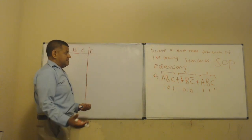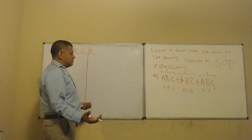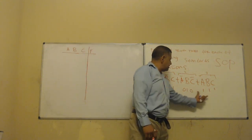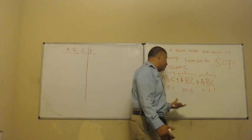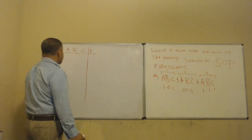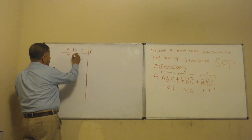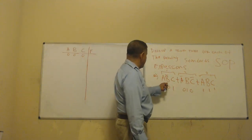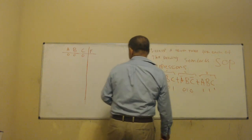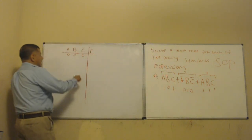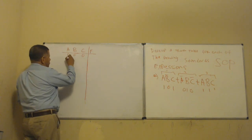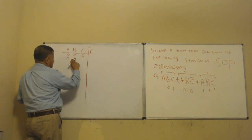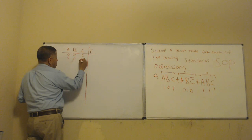But we still have to create the full table — that's what they're asking us to do. So we start: zero, zero, zero. I don't have anything at 0,0,0 that equals one, so the output is zero. Next line: zero, zero, one.